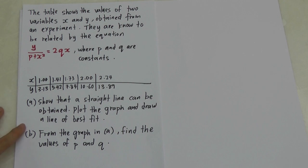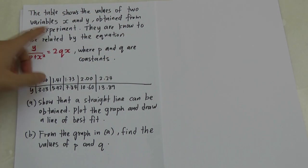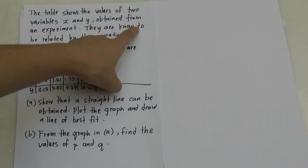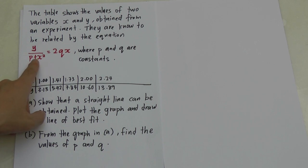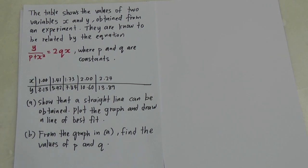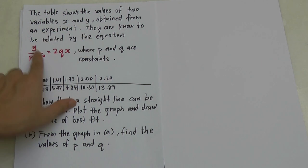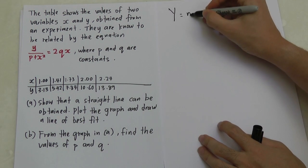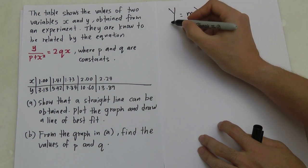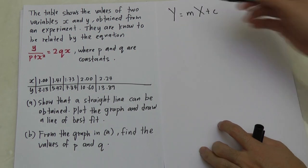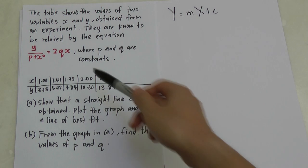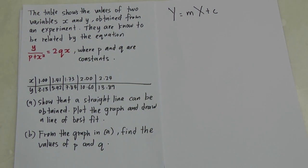So on here you see a question — I'm going to go through it. The table shows the values of two variables X and Y obtained from an experiment. They are known to be related by the equation Y over P plus X squared equals 2QX, where P and Q are constants. It's very important to know that X and Y are variables. For linear law, we always need to arrange into Y equals MX plus C form.